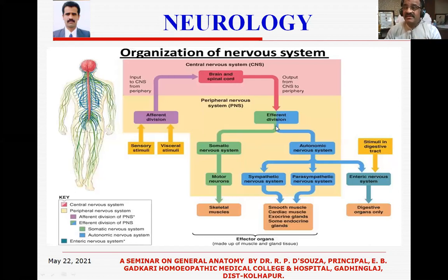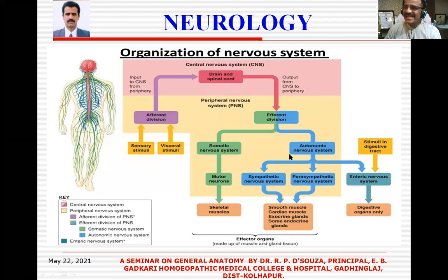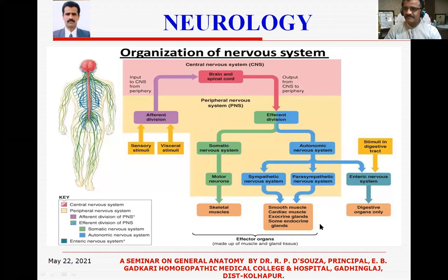In the peripheral nervous system we get somatic and autonomic divisions, and within autonomic we get sympathetic and parasympathetic. But there is one more division called ENS — the enteric nervous system — for stimuli in the digestive tract, specifically for digestive organs only. So apart from sympathetic and parasympathetic, we have the enteric nervous system. ANS targets smooth muscle, cardiac muscle, and the glands, with a separate provision for digestive organs through the enteric nervous system.